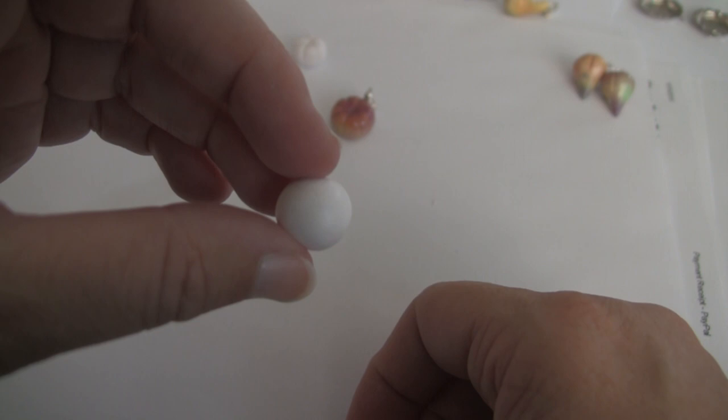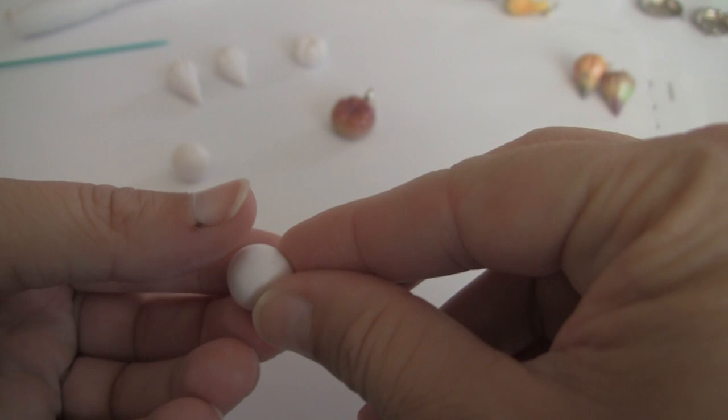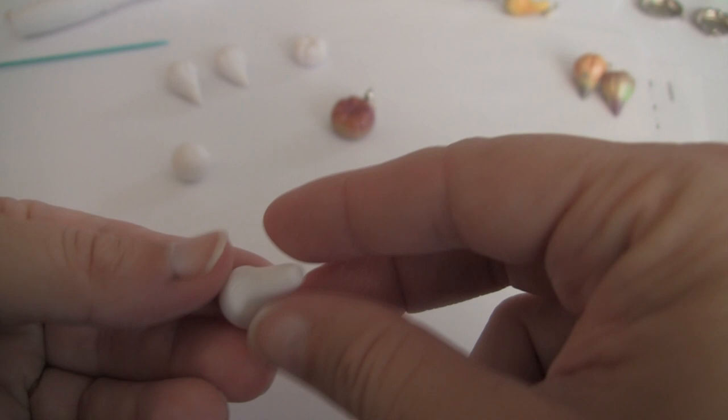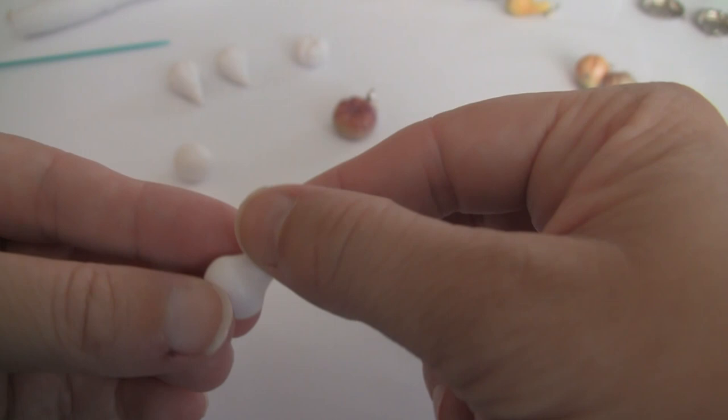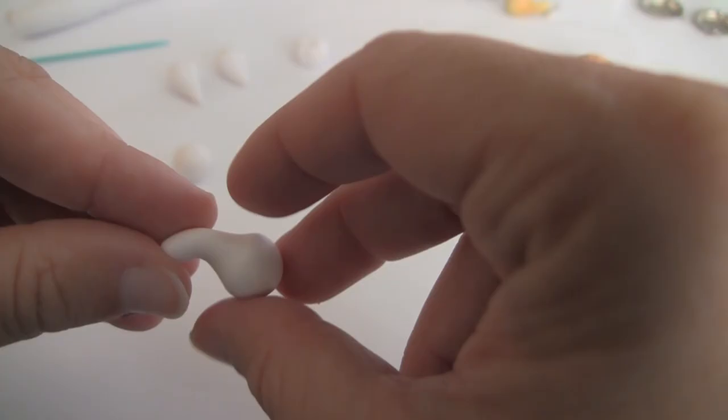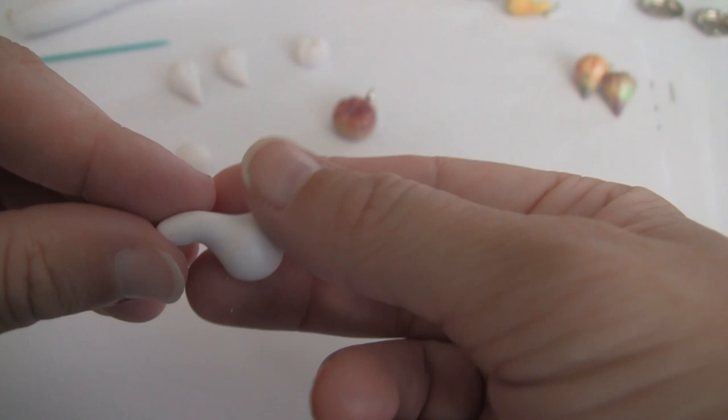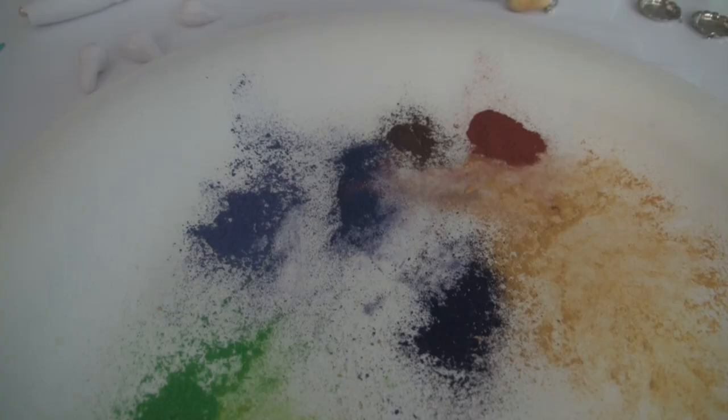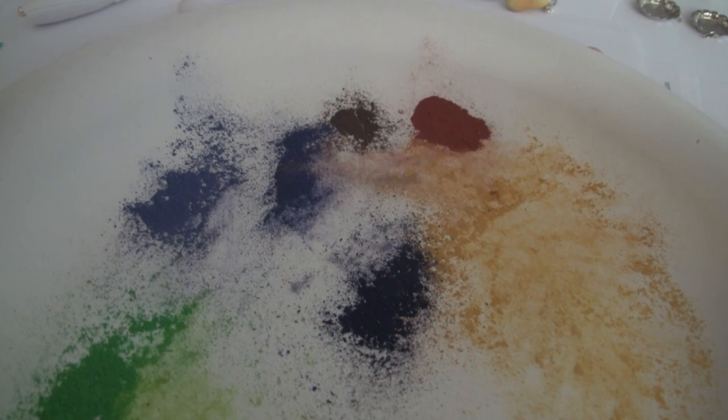Now we're going to go ahead and start with crookneck squash. Basically for that, I start elongating the top, make it nice and long, and then I start rolling slowly and then I bend it. It's a little crookneck squash, and for here I place the little stem hole right in the top.